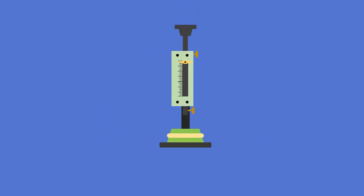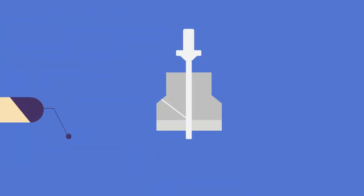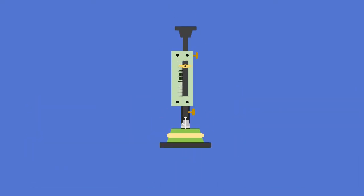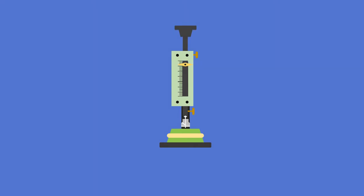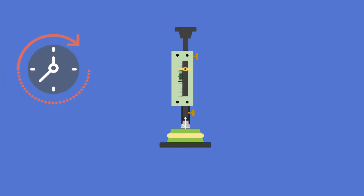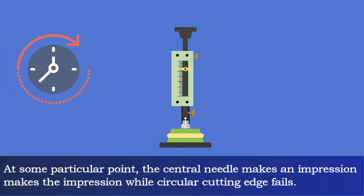Final setting time. Replace the needle of the VCAT apparatus with a circular attachment. This needle has two portions: one is a central needle and the other is a circular cutting edge. Upon lowering the circular attachment repeatedly at equal intervals, at some particular point, the central needle makes an impression while the circular cutting edge fails.